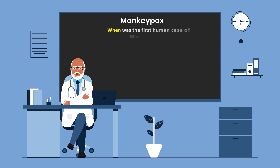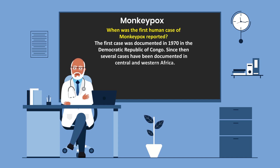When was the first human case of monkeypox reported? The first case was documented in 1970 in the Democratic Republic of Congo. Since then, several cases have been documented in Central and West Africa.